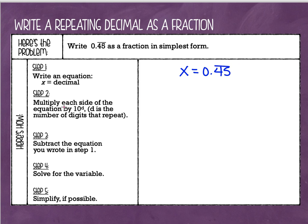Our next step is we are going to multiply each side of the equation by 10 to some power. We're going to multiply it by 10, or by 100, or by 1,000, and d is going to be the number of digits that repeat. So if one digit repeats, you multiply by 10. If two digits repeat, you multiply by 100. If three digits repeat, you multiply by 1,000. You're going to have the same number of zeros as the number of digits that repeat. So we have two digits repeating here, which means I'm going to multiply each side by 100.